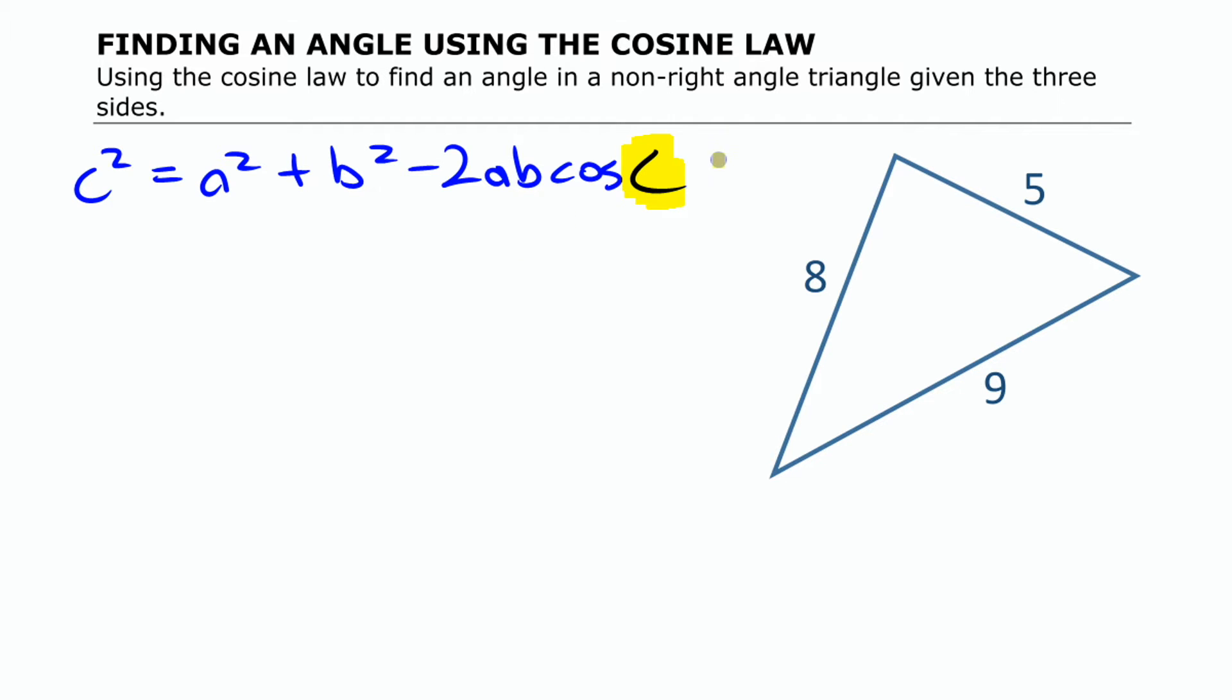Or some people would just take this formula and rearrange it and isolate it for that first, and then use that formula once you've already isolated. So first I'm going to do this where I'm going to substitute the numbers and then isolate that C.